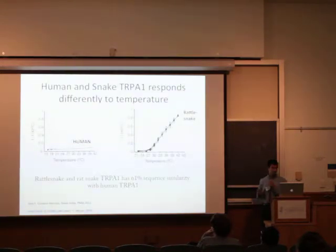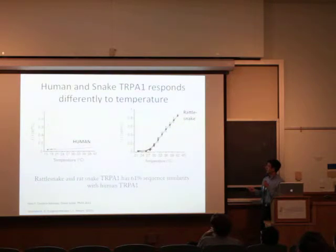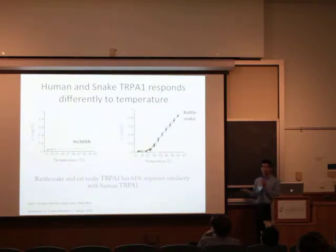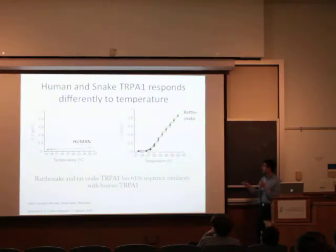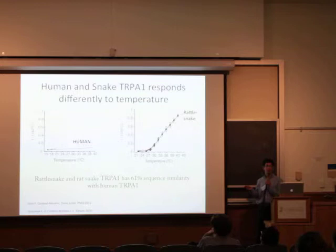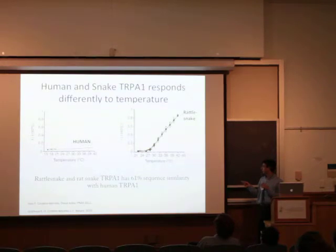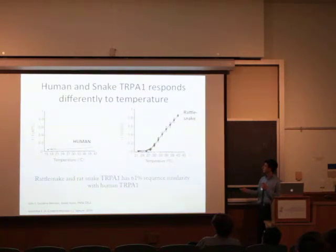This is precisely what scientists did in previous research, where they looked at human neural cells containing TRPA1 protein channels and saw that as temperature increases, there is barely any current change, meaning that human TRPA1 protein channels do not respond much to temperature. However, in rattlesnakes, as temperature increases, there is a large current spike, meaning that TRPA1 in snakes does respond to temperature. This is interesting given that rattlesnake TRPA1 has 61% sequence similarity with human TRPA1, suggesting that the other 39% sequence difference is the reason why they have different responses.